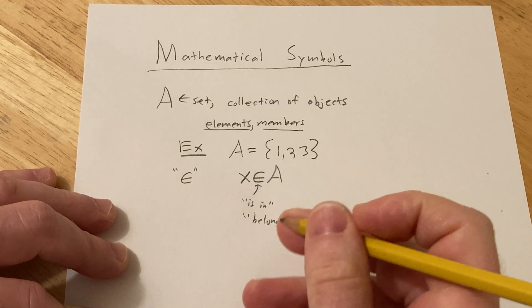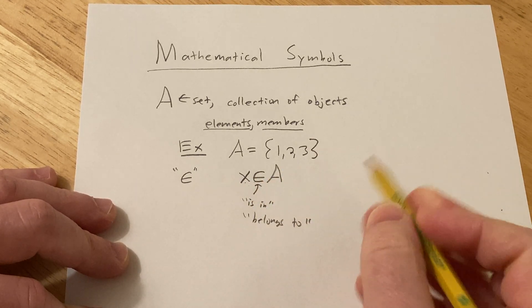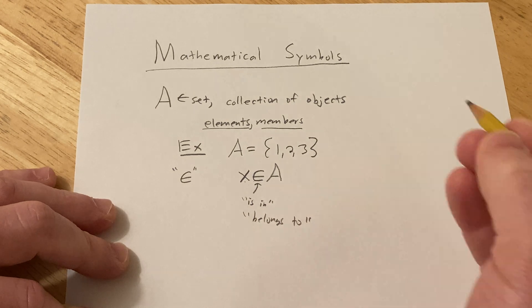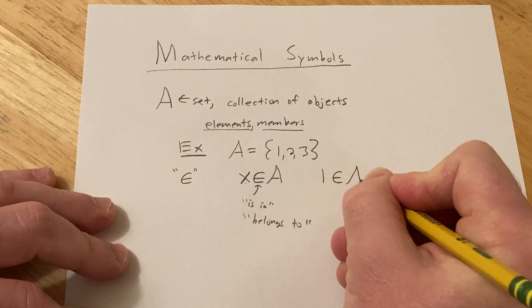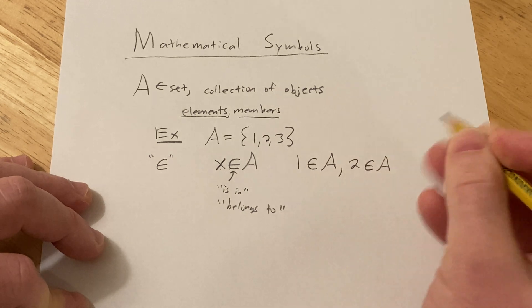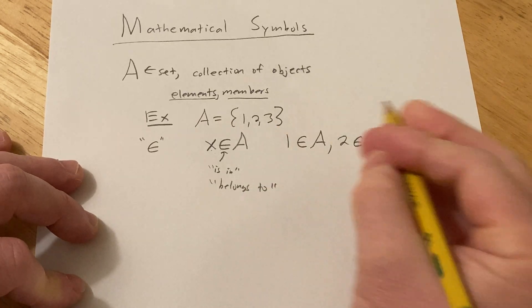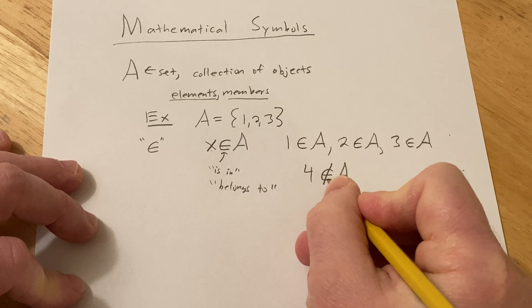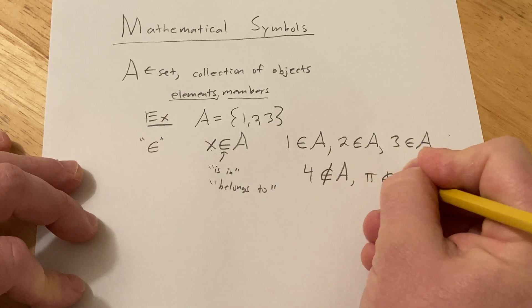You want to have multiple ways of saying it. Personally, I see this symbol and I think 'x is in A' — it's fewer syllables, easier for my mind. As a concrete example: 1 is an element of A, 2 is an element of A, 3 is an element of A. What number is not in here? Well, 4 is missing. So you draw the symbol with a line through it — that means 4 is not an element of A. Likewise, the number pi is not an element of A.